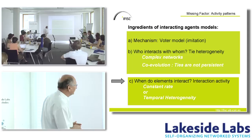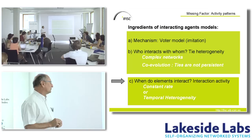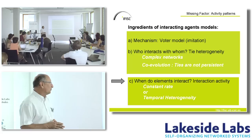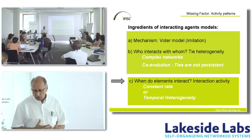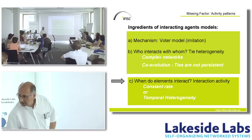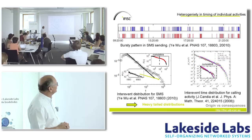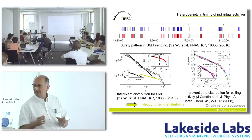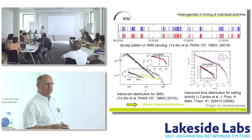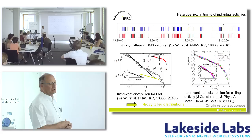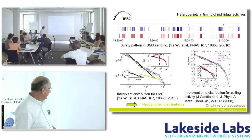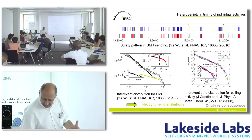Another point I'll throw on the table: when making simulations, there is the question of when elements interact. In most models implemented in computer simulation there is a constant rate of interaction. But this is not how humans behave — there is heterogeneity in the timing of individual activities. Data on SMS sending between two individuals shows bursts. The same is true for inter-event time distributions for mobile phone calls. There is broad evidence that interaction is not at a constant rate, and this needs to be taken into account.